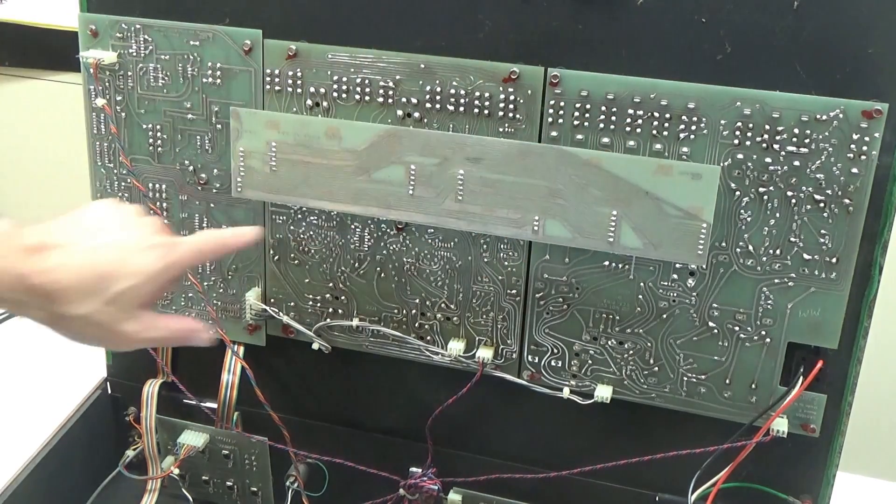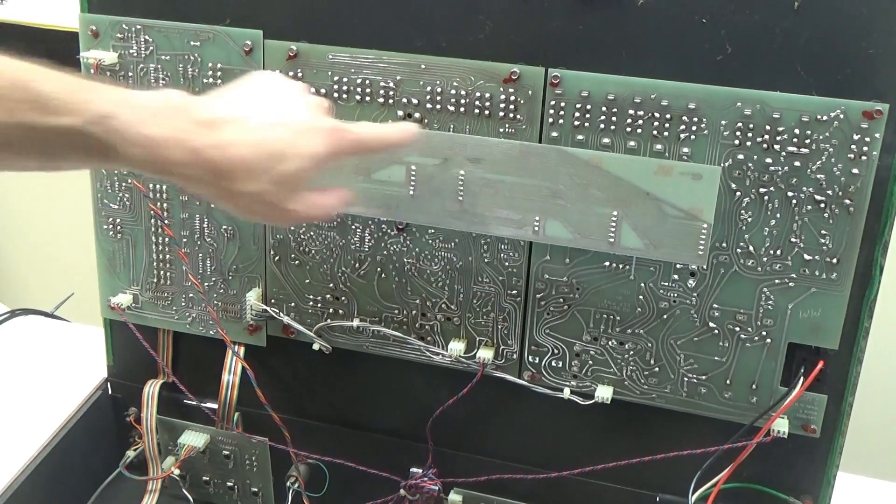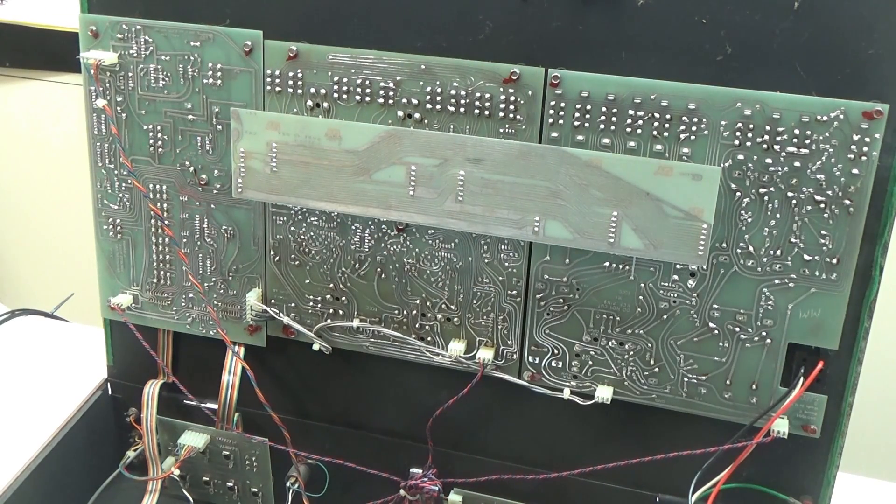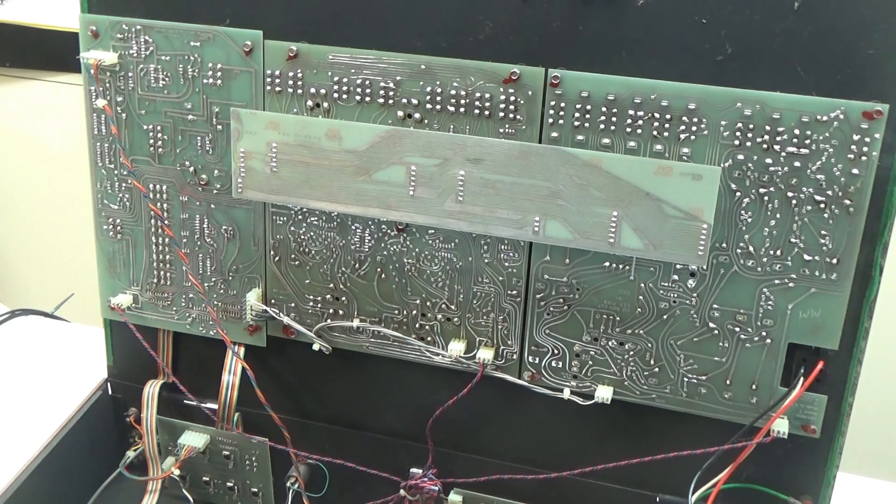And the boards have letters for their names. Underneath the front panel, we find boards A, B, and C connected together with this interconnect board. For those of you who have seen the inside of an ARP Odyssey or watched my video on the ARP Odyssey, this looks familiar because all these boards except board A are the same as the Odyssey.